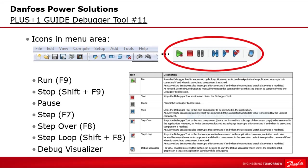Let's start with the debugger tool buttons. The keyboard shortcuts shown are set by default but are modifiable in setup options. The run button runs the debugger tool in a non-stop cyclic loop if no active breakpoint is set. The stop button stops the debugger tool session and closes the debugger tool. The pause button pauses the debugger tool session.